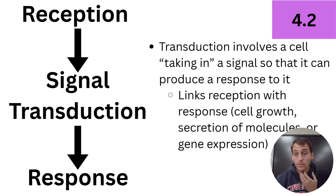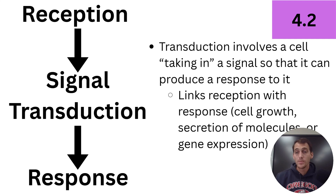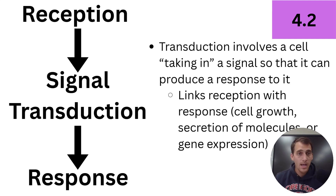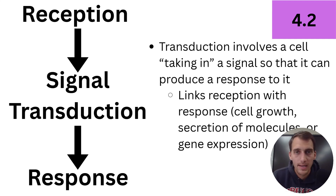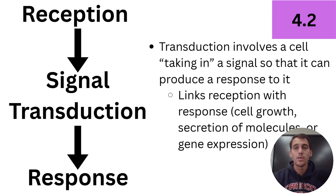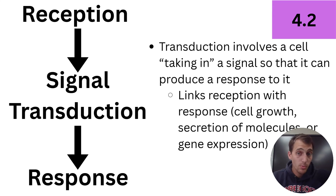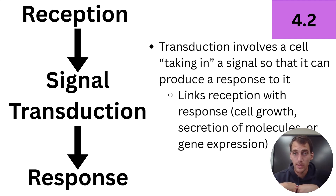But how do we get from the signal to the response? That's what's called signal transduction, and that's the main topic for today. It is the intermediate between receiving a signal and doing something about it — reacting to it, responding to it. Signal transduction involves a cell taking in a signal so that it can produce a response to it. It links reception with response.